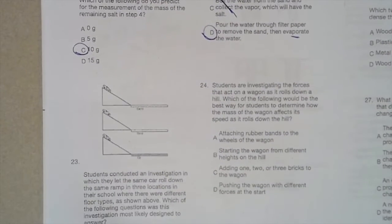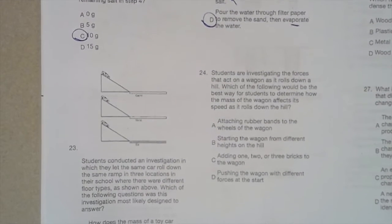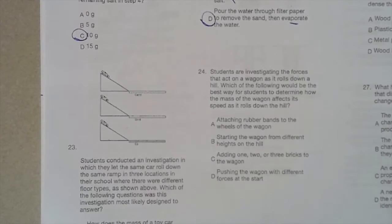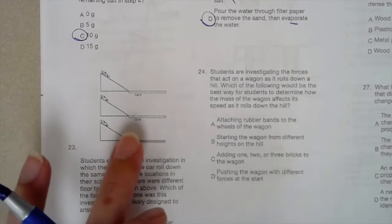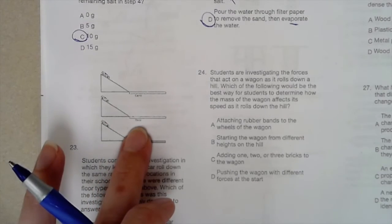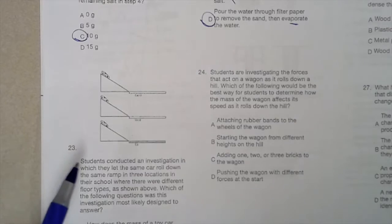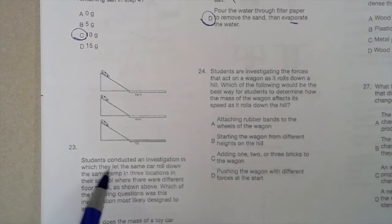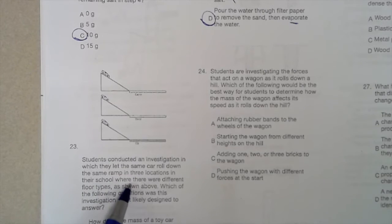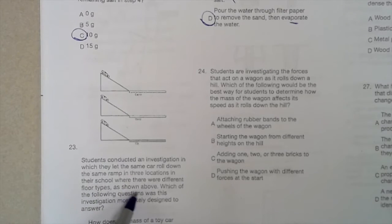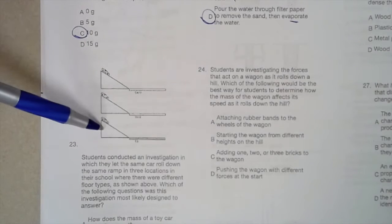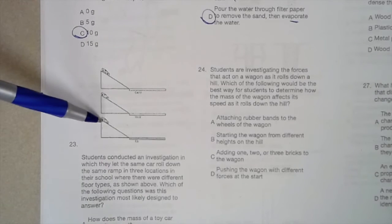Number 23, we have a picture here of three ramps and they have, looks like concrete, wood, and tile maybe? Can't read that very well. Students conduct an investigation which they let the same car roll down the same ramp in three locations in their school where there were different floor types as shown above. Which of the following questions was this investigation most likely designed to answer? So the ramp's the same, the car's the same, the floor type is different.